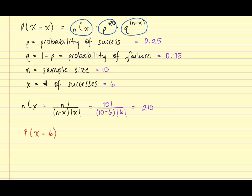So using this, I am going to plug it into the formula and then find the other pieces. So I have 210 times p, and recall p is 0.25, so 0.25 to the sixth power will be the second piece. And then for the third piece, I have q, which is 0.75 to the n minus x power. And so that will be 10 minus 6 for my exponent.